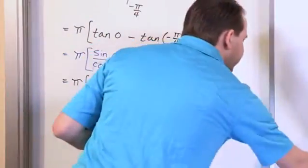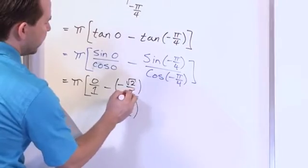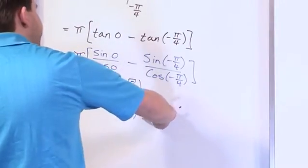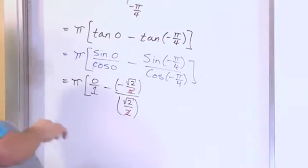And so what we have here, since we have 2's on the top and the bottom in the denominators, we can cancel that. If you don't see that, you can flip over and multiply and see that the 2's are going to cancel.